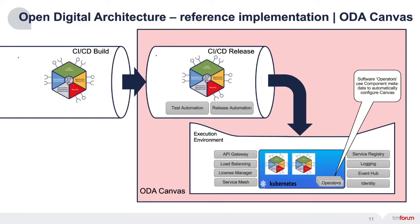These are pieces of software running in your canvas which examine the metadata for each component and then automatically configure all the non-functional services. So when I deploy a component and it's exposing some role information, the operator will take that and configure the identity service.